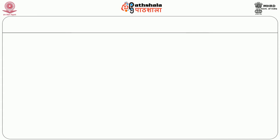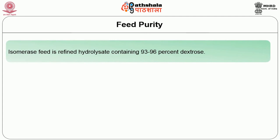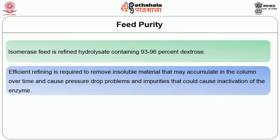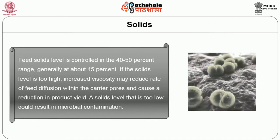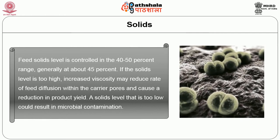The isomerase feed is a refined hydrolysate containing 93 to 96% dextrose. Efficient refining is required to remove insoluble material that may accumulate in the column over time and cause pressure drop problems, and to remove impurities that could cause enzyme inactivation. Ion exchange treatment of feed is required to lower calcium levels to 3 parts per million or less, since calcium is inhibitory to isomerase. Feed solid levels are controlled in the 40 to 50% range, generally at about 45%. If the solid level is too high, increased viscosity may reduce the rate of feed diffusion within the carrier pores and cause a reduction in product yield. A solid level that is too low could result in microbial contamination.